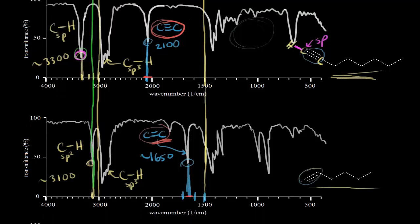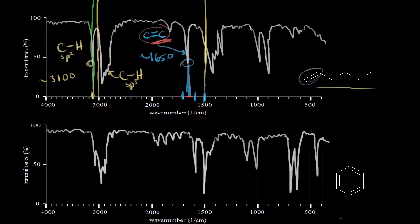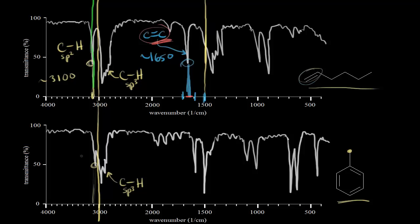Finally, let's compare the alkene to an arene — toluene. Drawing a line around 3,000, we see below 3,000 the sp-3 C-H stretch, which corresponds to the methyl carbon in toluene. There's also a small peak just above 3,000, close to 3,100, which is where we'd expect a C-H bond stretch with an sp-2 hybridized carbon. This looks very similar to what we saw for 1-hexene, so it can be tricky to distinguish just from that part of the spectrum.